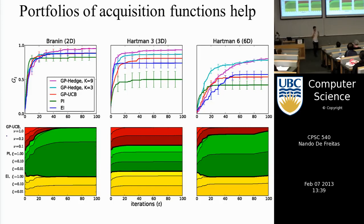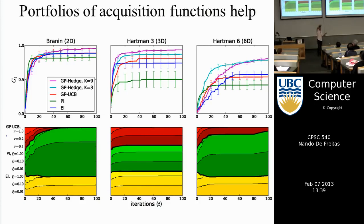You can also use portfolios of acquisition functions. My grad student Matt, who will teach one lecture while I'm away, played with having portfolios of these three functions. Since he didn't know which to choose or how to set epsilon, he introduced a new hierarchy in the decision-making process and chose among those three — getting much better results.